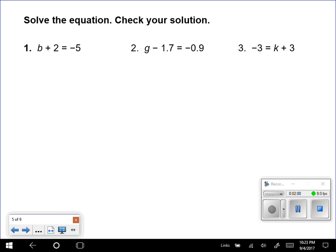So we have this problem number one here. It says B plus 2 equals negative 5. So one thing I do want you to write down is the goal of solving an equation is to get the variable alone.